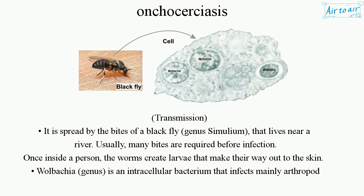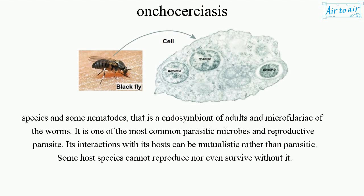Wolbachia is an intracellular bacterium that infects mainly arthropod species and some nematodes. It is an endosymbiont of adults and microfilariae of the worms. It is one of the most common parasitic microbes and reproductive parasites. Its interactions with its hosts can be mutualistic rather than parasitic. Some host species cannot reproduce nor even survive without it.